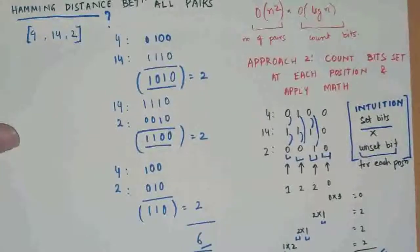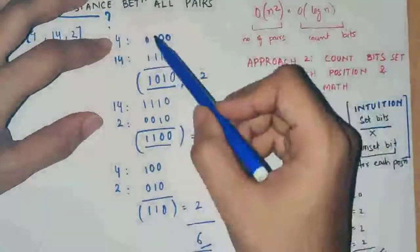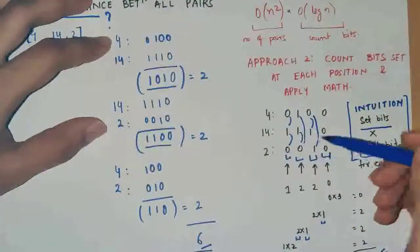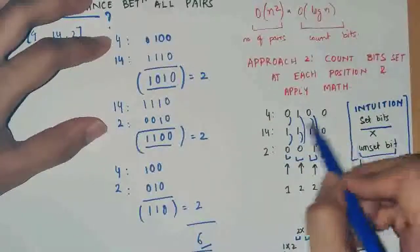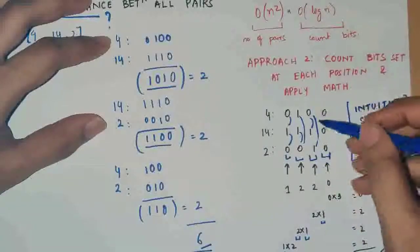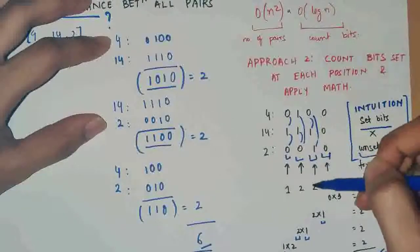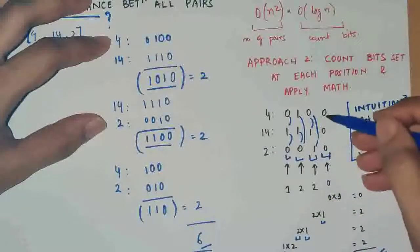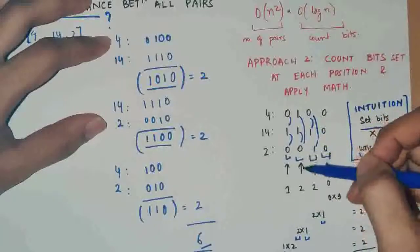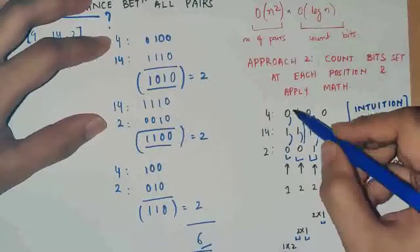Now let's look at approach 2. In this approach we are trying to replicate the same thing in a much more efficient way. Instead of finding all pairs and calculating each one by one, we write down the numbers and check each bit position. At this bit position there are 2 bits alternating — 0 and 1 — contributing 2 to the answer. Here it's not contributing anything because there are no alternating bits. Here we have 2 alternate bits again, contributing 2, and here also 2.